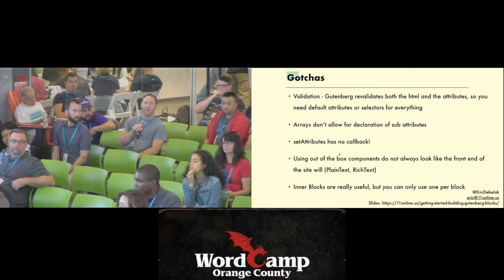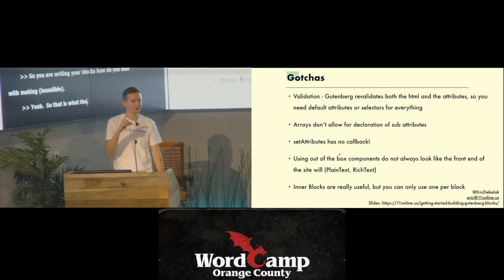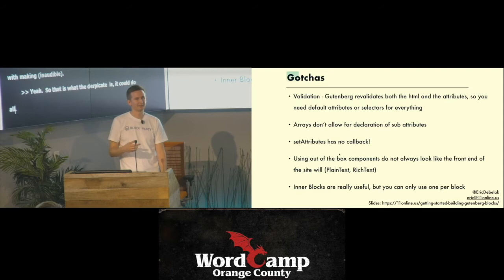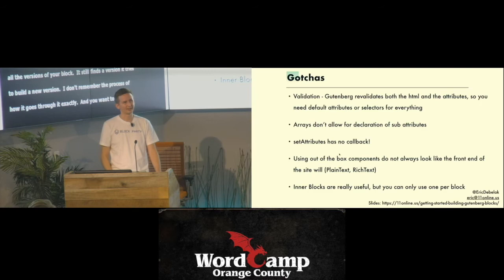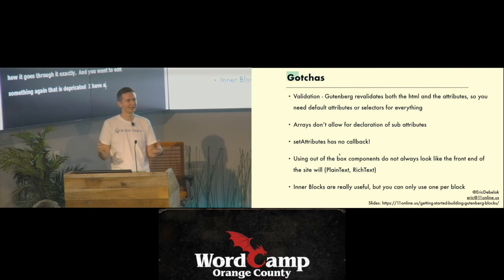Question: when you're writing custom Gutenblocks, how do you deal with making it backwards compatible? That's what the 'deprecated' key is for. Deprecated is an array where you list all the deprecated versions of your block so it can still revalidate. When Gutenberg finds a deprecated version, it tries to build the new version from that. An open question for the future is: what happens if you have a custom Gutenberg block plugin out there for five years? How many deprecated versions are you going to have? We don't know what that looks like yet, but right now that's the path being provided.